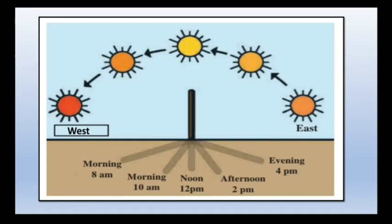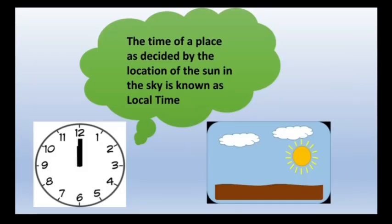We also experience that it's cooler in the morning and evening and warmer in the afternoon. The noon time is the same at any given longitude across the earth, that is, from the north pole to the south pole. The time of a place as decided by the location of the sun in the sky is known as its local time.